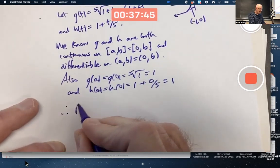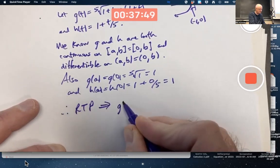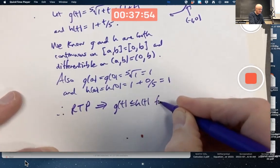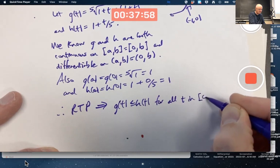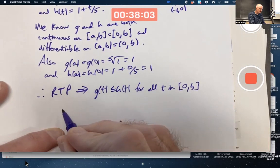Therefore, the racetrack principle (RTP) implies g(t) is less than or equal to h(t) for all t in the interval from zero to b.